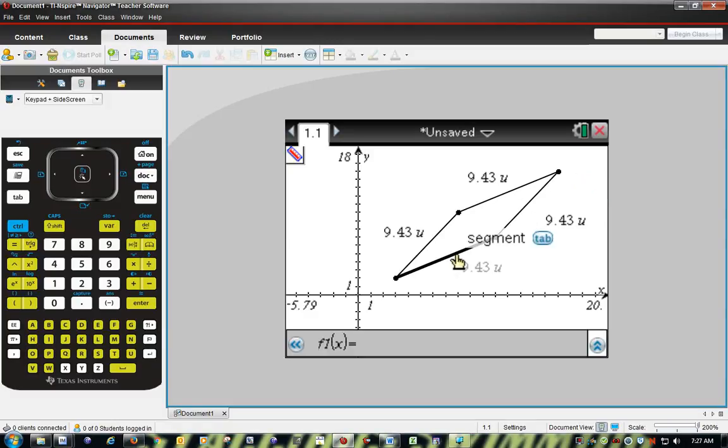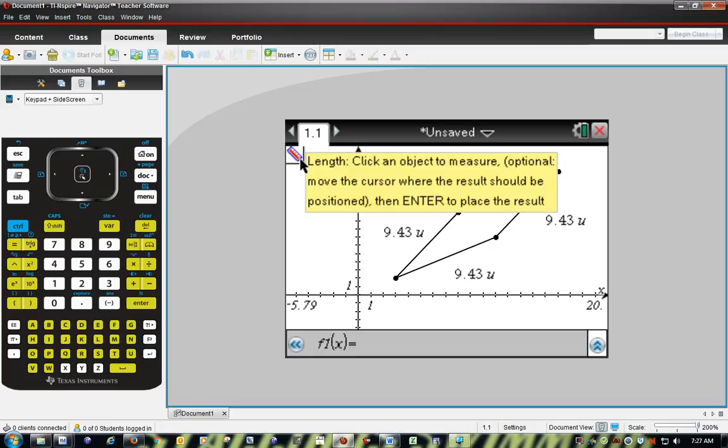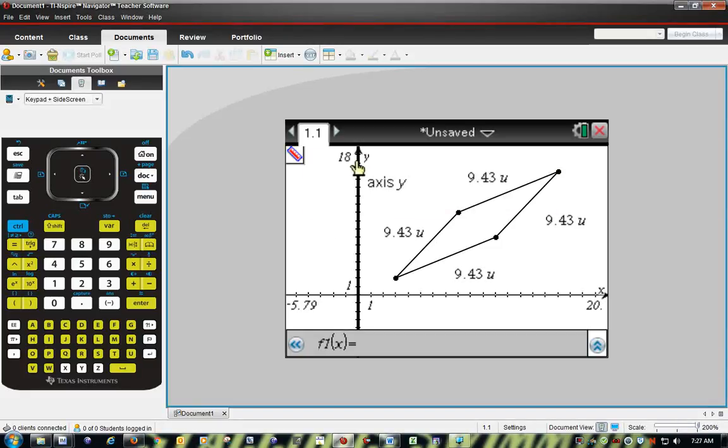Click on here, 9.34 units. Click on here, 9.34 units. So all you have to do when you're trying to measure using your calculator is click on one of the segments, and you'll get your measurement every single time.